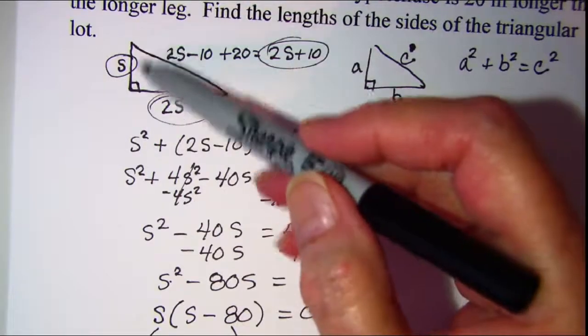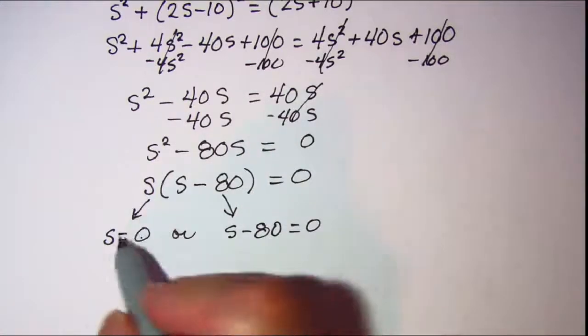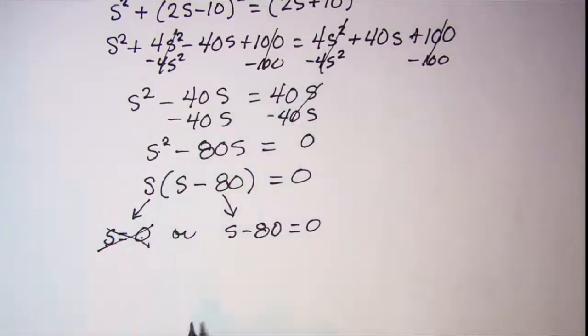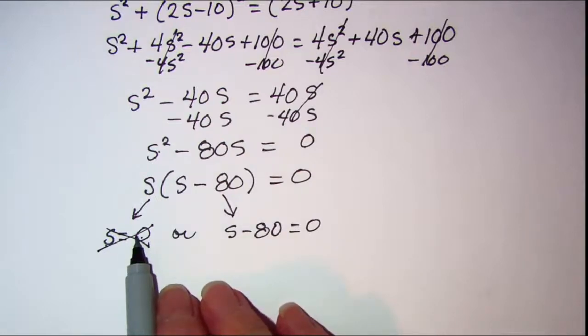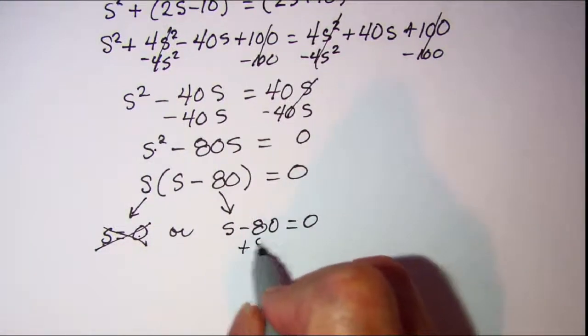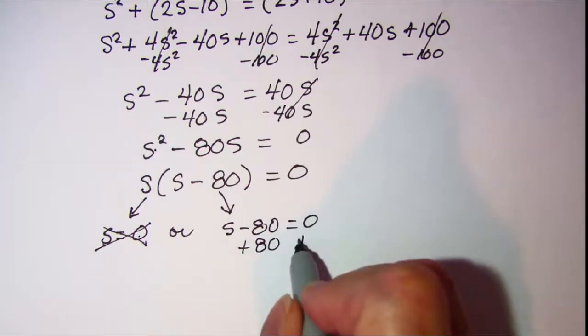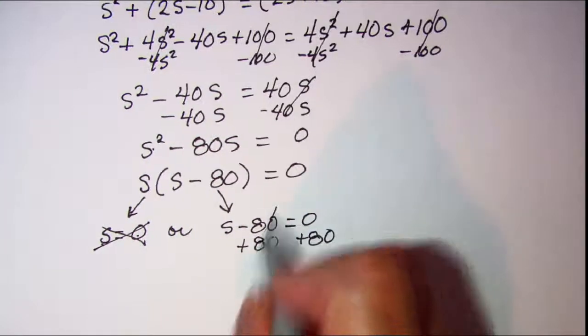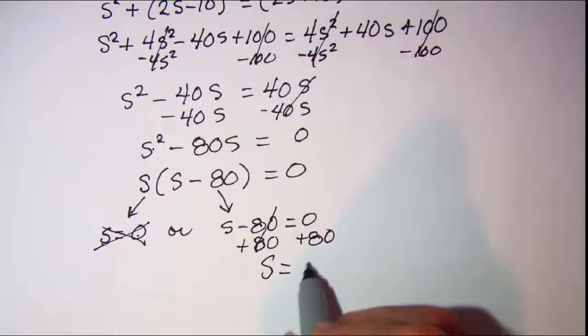If s is zero, then that triangle would be non-existent, so I'm not even going to consider this solution. But if I add 80 to both sides here, I'll get s is equal to 80.